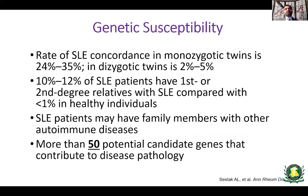Regarding genetic susceptibility: lupus is not a monogenic disease — there is no one single gene that puts somebody at higher risk. There are multiple genes, up to 50 potential candidate genes that can contribute to disease pathology. The rate of lupus concordance in monozygotic twins is about 24–35%; in dizygotic twins, it's about 2–5%. About 10–12% of lupus patients have a first or second degree relative with lupus, compared to less than 1% in healthy individuals, pointing to the fact that genes do play a role.